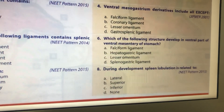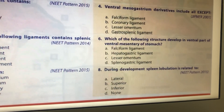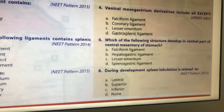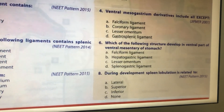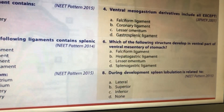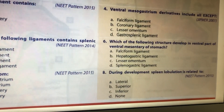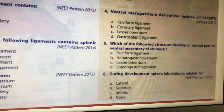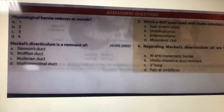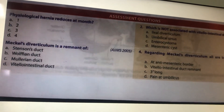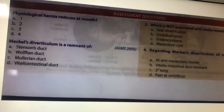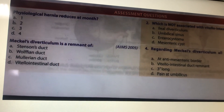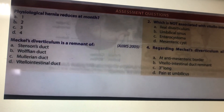The ventral part of the mesentery of the stomach gives rise to the lesser omentum. During development of the spleen, lobulation is seen on the superior border. Physiological hernia reduces at the 10th–11th week, which is approximately the third month.